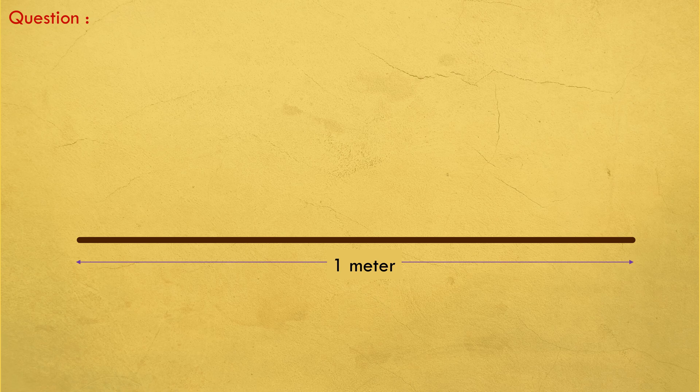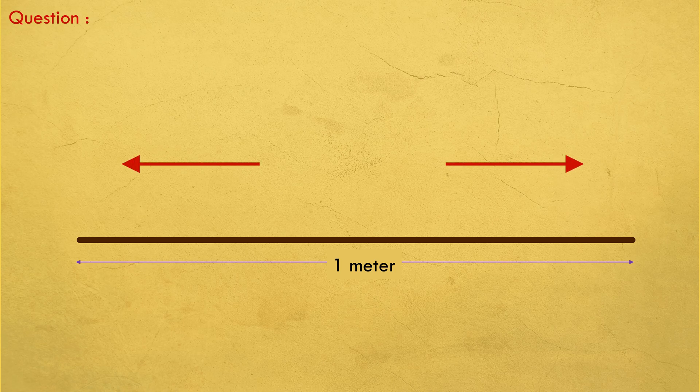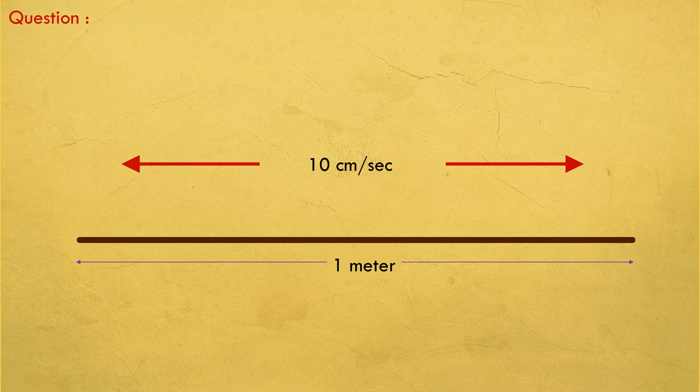The question is, there is a 1m long one-dimensional rod on which there are ants walking randomly in either of the two directions from random positions with constant speed of 10cm per second.